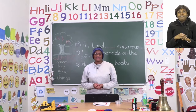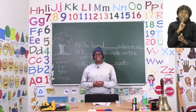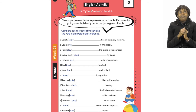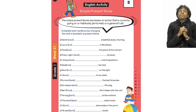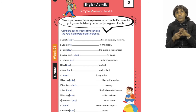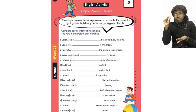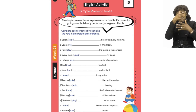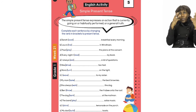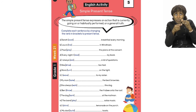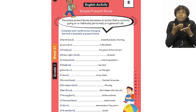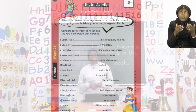For our lesson now, boys and girls, let us all go to page 14. On page 14 we are going to be doing Simple Present Tense. Simple Present Tense expresses an action that is currently going on or something that is always done as a general truth. If we look at the sentences we have there, we have a lot of work to do, but don't worry — there's a simple rule that will help us. Let's take a look at the board.